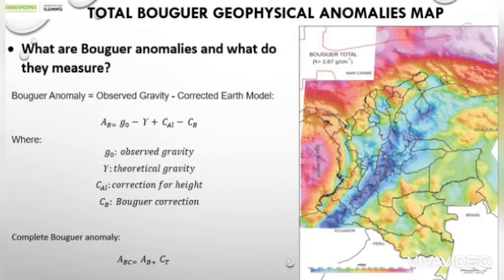If in addition the correction for terrain CT is added to the formula, the complete Bouguer anomaly is obtained. The complete Bouguer anomaly is equal to the simple Bouguer anomaly plus the terrain correction.